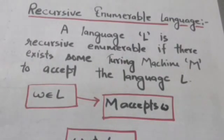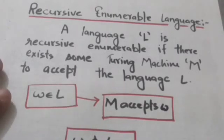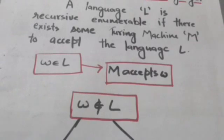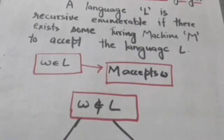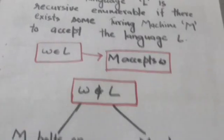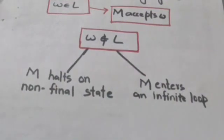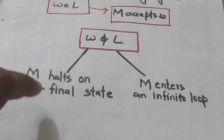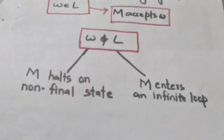A language L is recursive enumerable if there exists some Turing machine M to accept the language L. Now suppose there is a recursive enumerable language L accepted by Turing machine M. Then strings which belong to language L will be accepted by Turing machine M, while strings which do not belong to L will either cause Turing machine M to halt on a non-final state or enter an infinite loop.